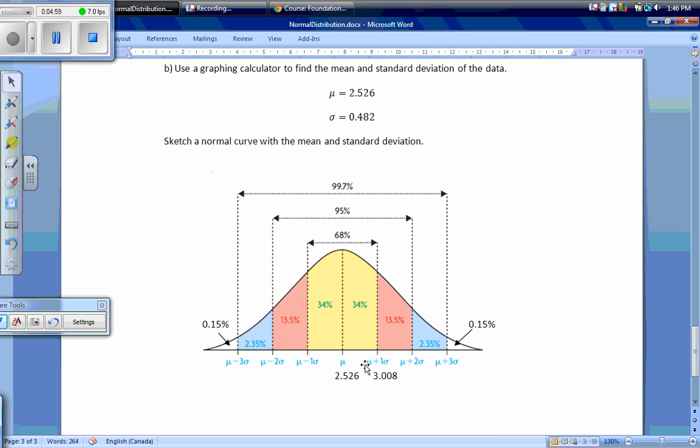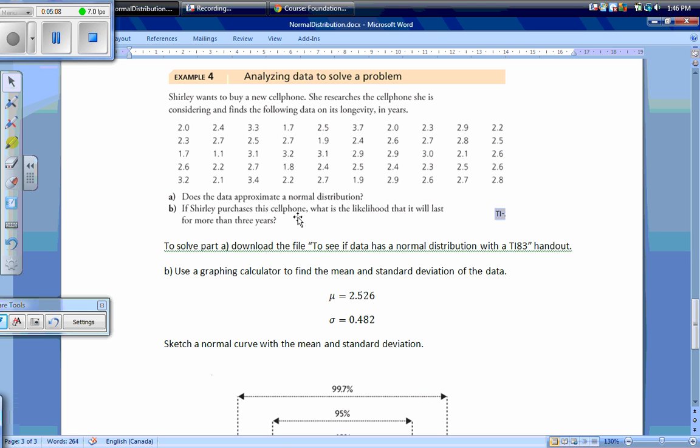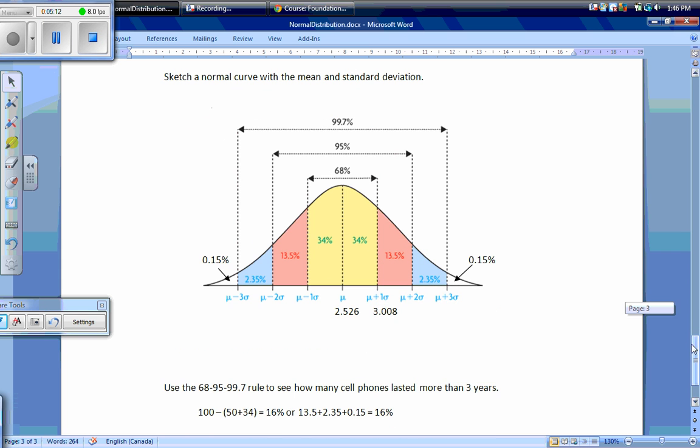Here's my mean, which was 2.526, and my mean plus 1 standard deviation, which works out to 3.008. Now what we're trying to find is the likelihood that it will last for more than 3 years. 3.008 years is really close to 3 years, so this is all I really need.